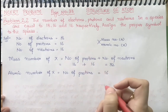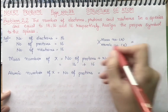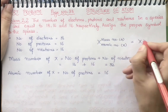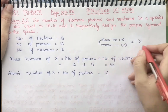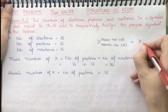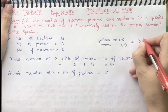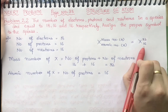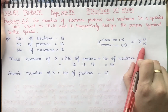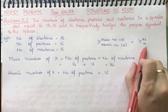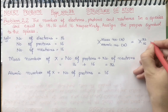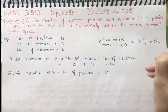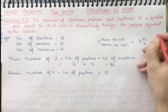Let's assign the symbol first: element X with atomic number 16 and mass number 32. An element having atomic number 16 is sulfur. So sulfur is having atomic number 16 and mass number 32.